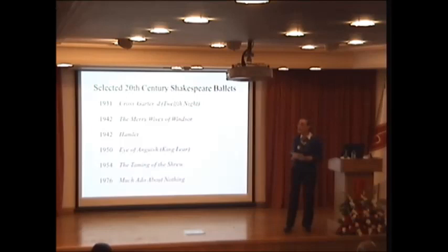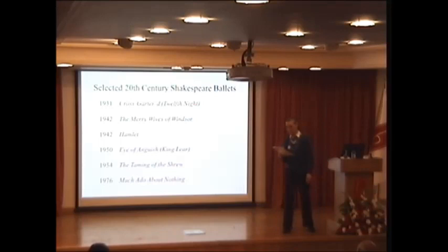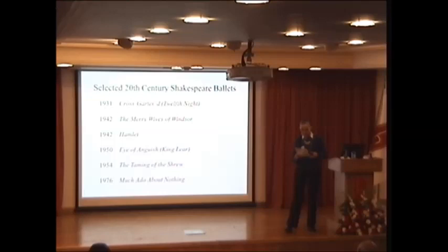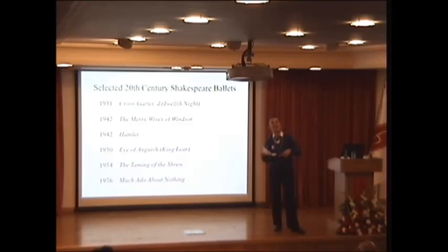The most famous Romeo and Juliet productions are: the 1938 Lavrovsky production in Brno; the 1955 Ashton and 1955 Rodriguez productions; the 1958 Franco production; the 1965 Kenneth MacMillan production; the 1971 Neumeier production; and also the 1971 Rodriguez production in Ankara. That was the first Shakespeare ballet in Turkish ballet history - Romeo and Juliet by Rodriguez in 1971.